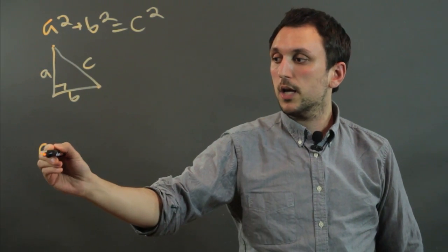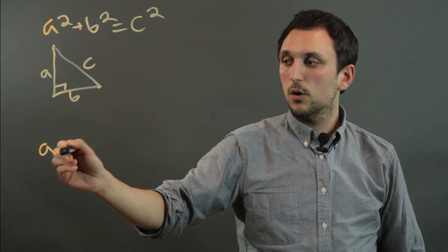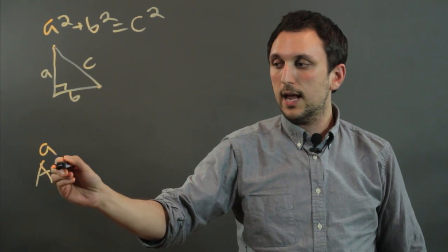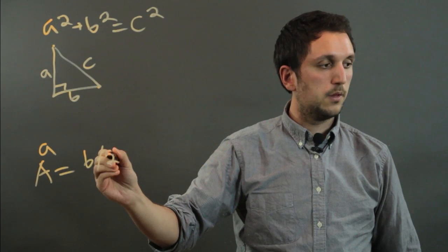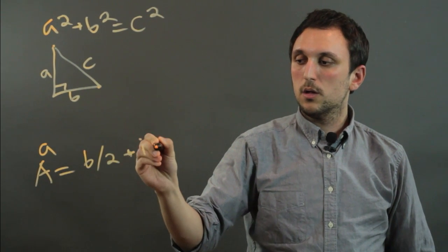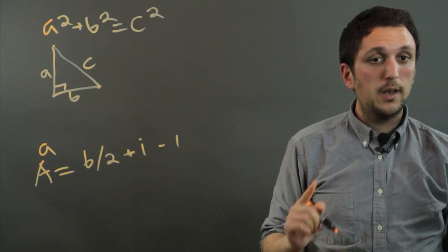Pick's Theorem is a little more complicated. Pick's Theorem says that area, or we could use the capital letter A, equals B over 2 plus I minus 1.